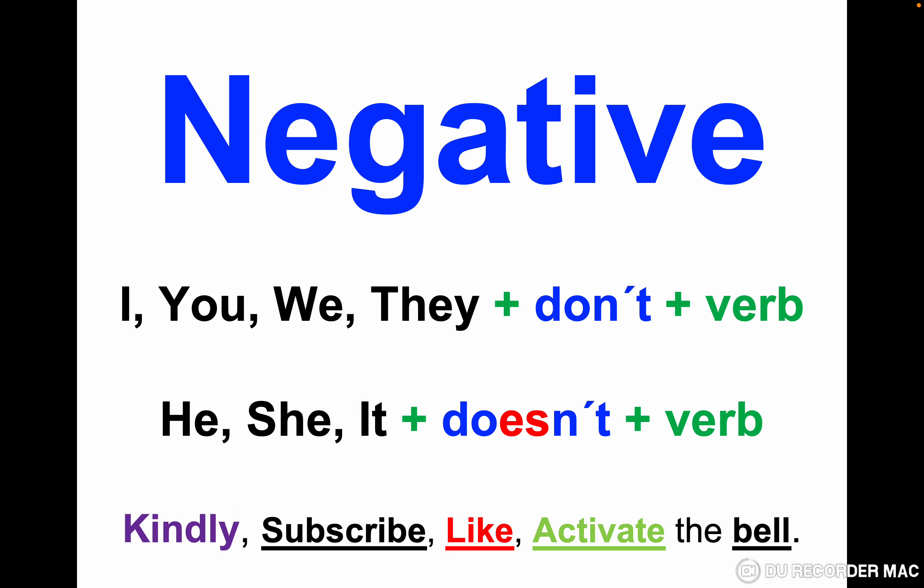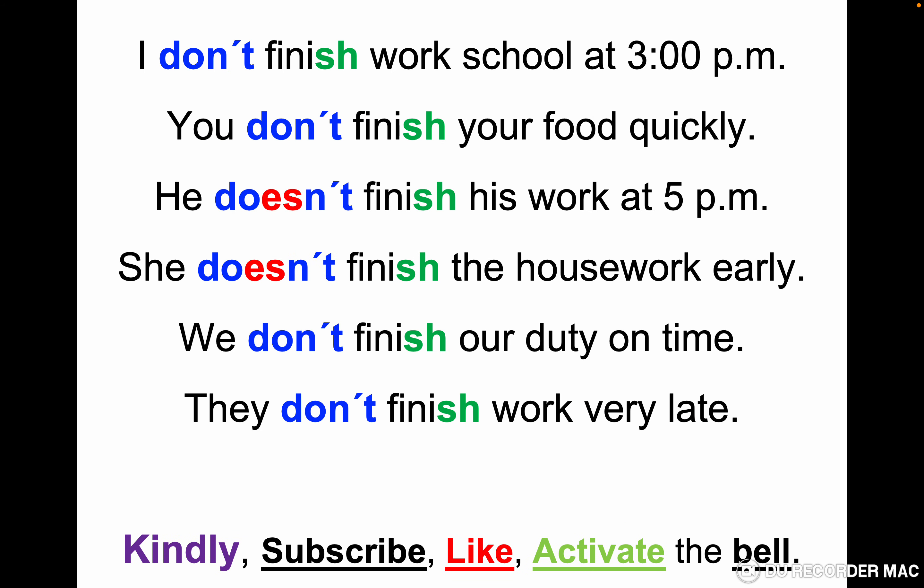Negative form: I don't finish work or school at 3 p.m. — p.m. means in the afternoon. You don't finish your food quickly. He doesn't finish his work at 5 p.m. She doesn't finish the housework early. We don't finish our duty on time. They don't finish work very late. In the negative form the verb doesn't change in all pronouns, but we need to write 'he doesn't' and 'she doesn't.'